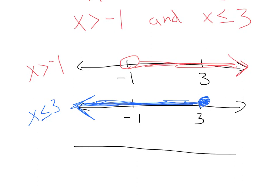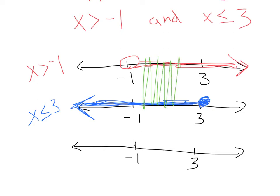One final number line with negative 1 and 3. Looking back at our original problem — is this an or or an and? Here we have an and. That means values have to be in common to be included in our final answer. I have all of this greater than negative 1, and all of this less than or equal to 3, but the only thing they have in common is the in-between portion right here. Both must be true for an and.